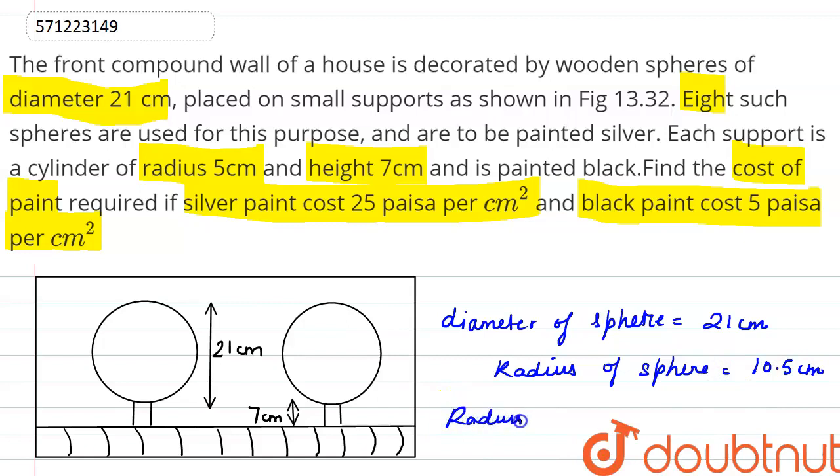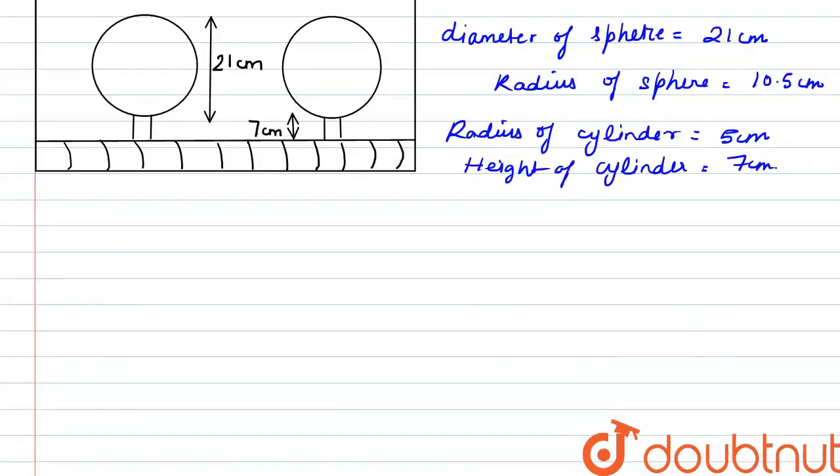And the radius of cylinder or the cylindrical support is given as 5 cm and the height of cylinder is also given to us as 7 cm. Next we have to paint the spheres.